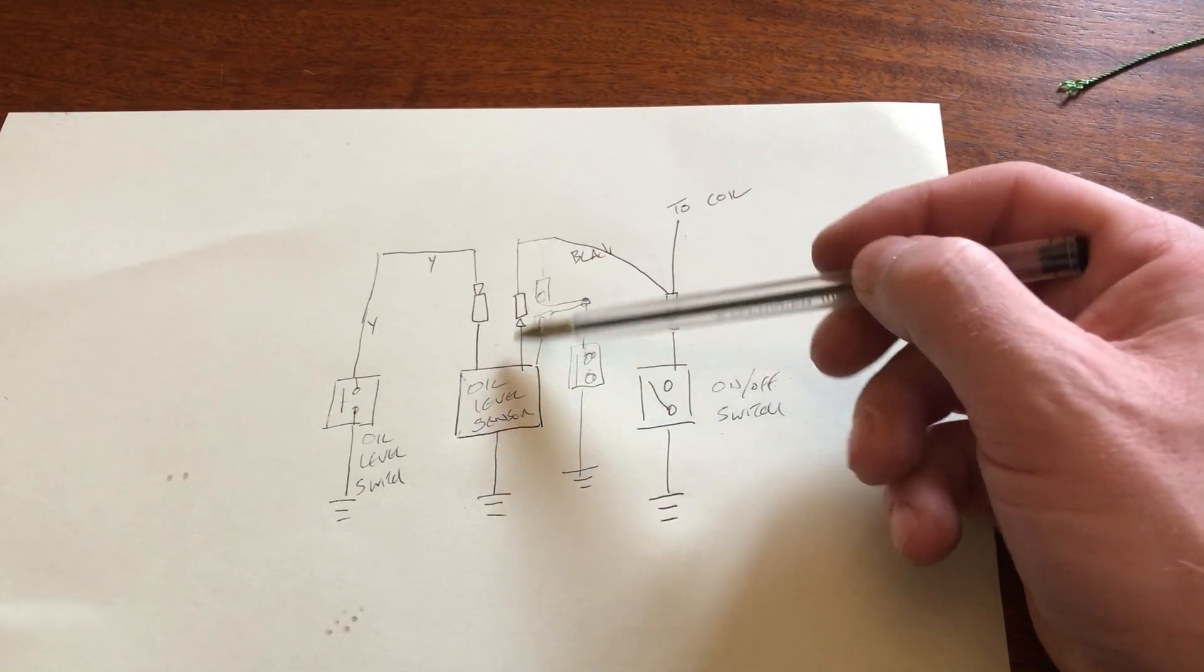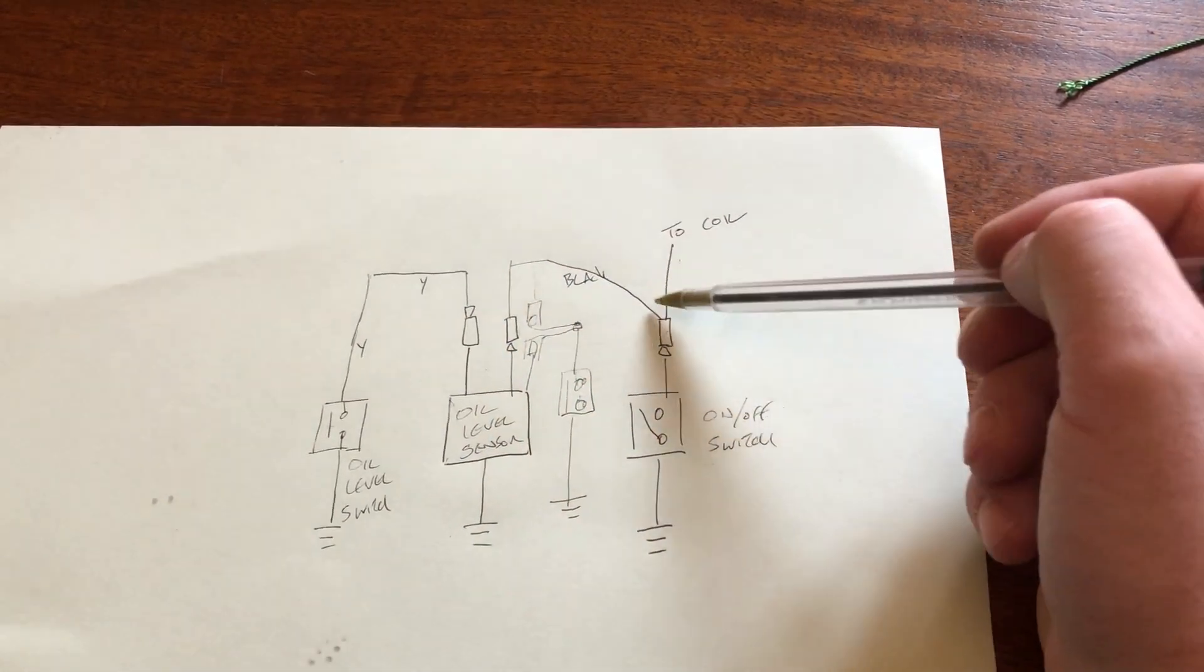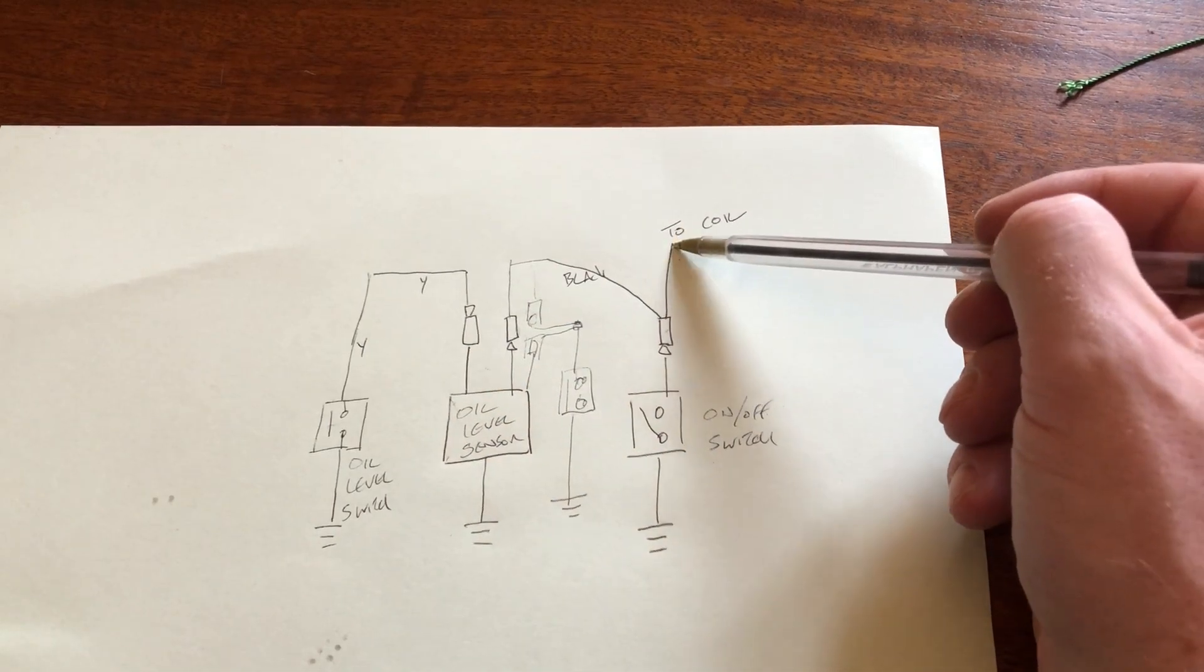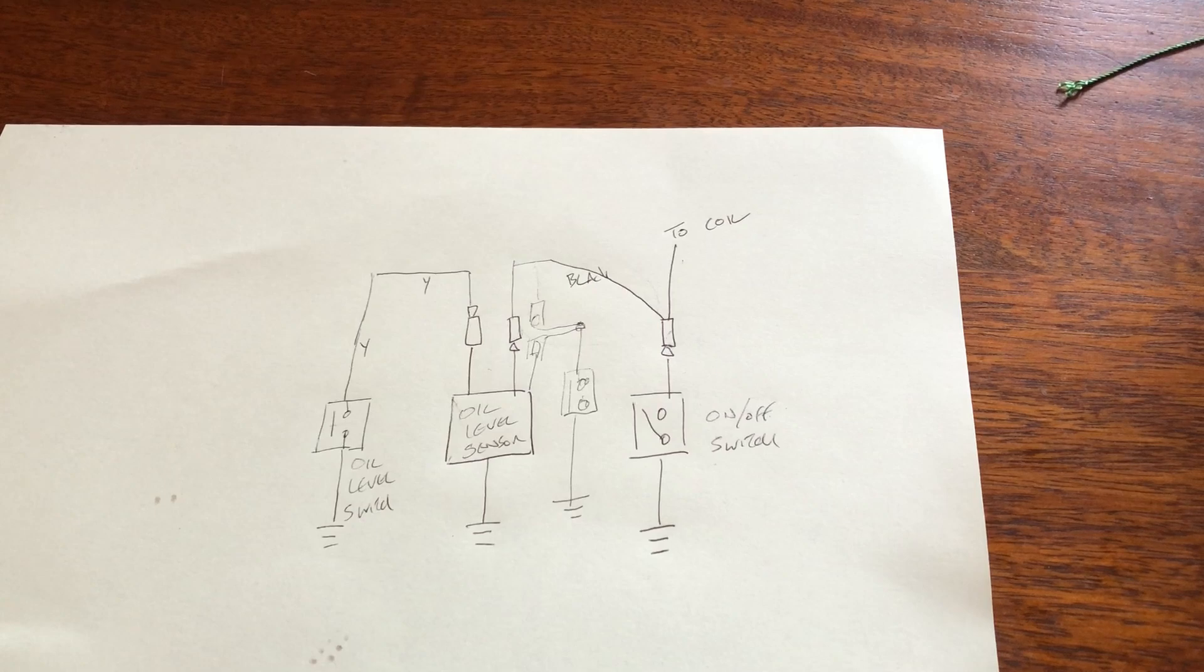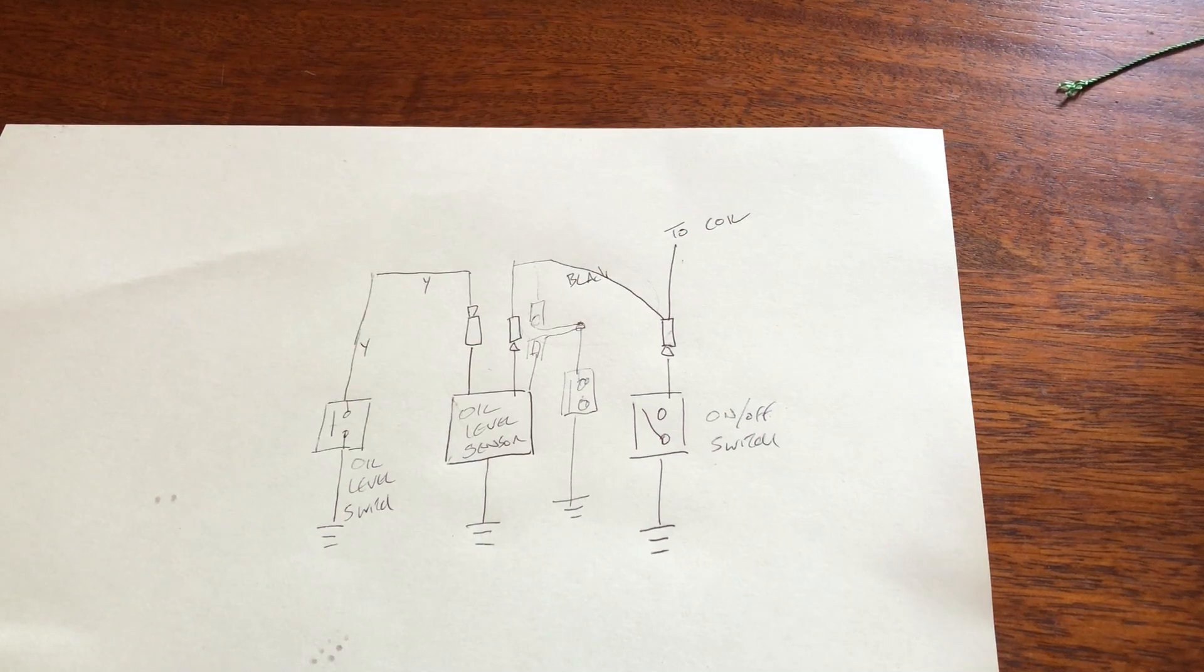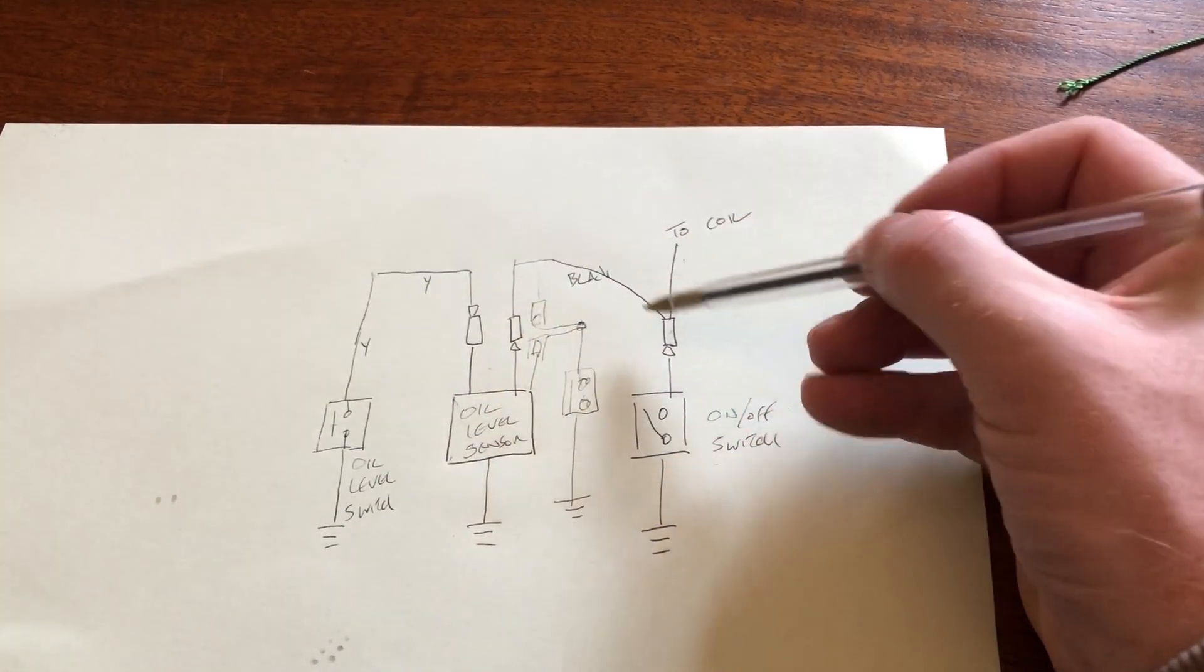Obviously then that goes down through the black cable and puts the coil down to earth again. Once you put the coil down to earth, there's no ignition, so the spark plug doesn't spark and that cuts out.